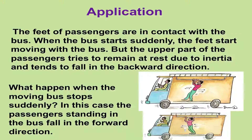The first law of motion has many applications in our daily life. Why do passengers standing in a bus fall in the backward direction when the stationary bus begins to move suddenly? When the bus starts suddenly, the feet start moving with the bus but the upper part of the passenger tries to remain at rest due to inertia and tends to fall in the backward direction. What happens when the moving bus stops suddenly? In this case, the passengers standing in the bus fall in the forward direction.